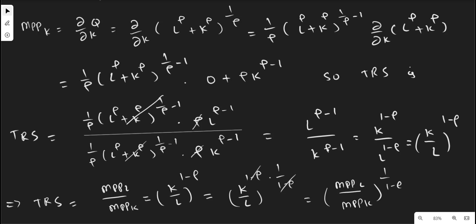If we exchange numerator and denominator, the signs of the powers change. Shifting capital to the numerator gives it power (1 minus rho), and shifting labor to the denominator also gives it power (1 minus rho). Since K and L now share the same power, we can write the whole expression with the common power (1 minus rho).